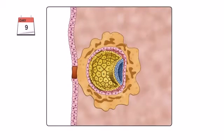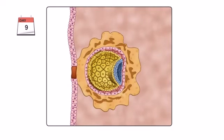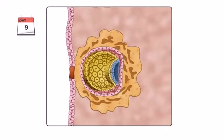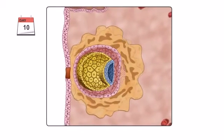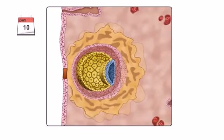By day 9, the blastocyst is completely embedded in the uterus wall. At this stage of development, the growth of the syncytiotrophoblast and cytotrophoblast is much quicker than the bilaminar embryonic disc.